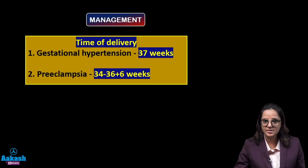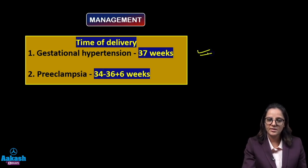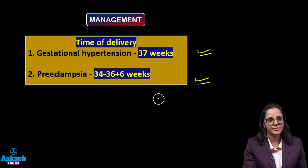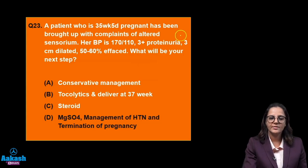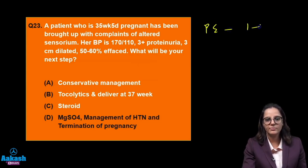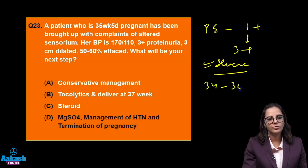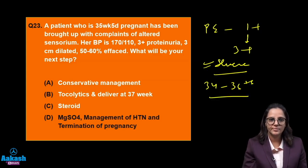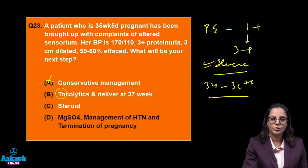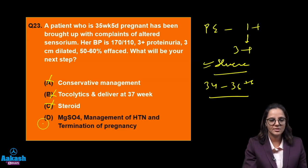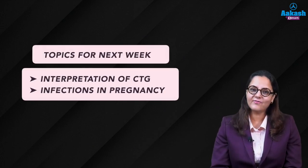Regarding time of delivery: if gestational hypertension, take to 37 weeks; if preeclampsia — 1 plus proteinuria plus gestational hypertension — deliver between 34 to 36 plus 6 weeks. Coming back to the question: the patient has 3 plus proteinuria, severe preeclampsia with BP 170 by 110, and should be delivered between 34 to 36 plus 6 — she is 35 plus 5. So we have to terminate the pregnancy. Conservative management — no. Tocolytic — no. Steroids — not needed at 35 plus 5. Magnesium sulphate, management of hypertension, and termination of pregnancy — yes. This is the option of choice. This brings us to the end of the discussion. Next time we will discuss how to read CTG and infections in pregnancy.